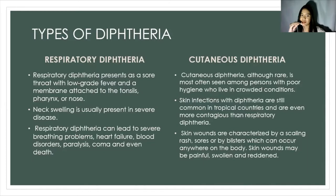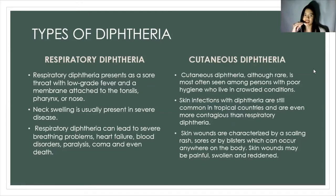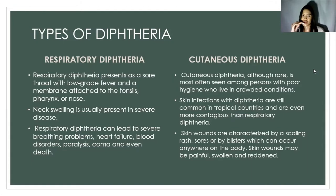In respiratory diphtheria, the bacteria most commonly infect the respiratory system, which includes body parts involved in breathing. When the bacteria gets into and attaches to the lining of the respiratory system, it can cause weakness, sore throat, mild fever, and swollen glands in the neck. The bacteria makes a toxin that kills healthy tissues in the respiratory system. Within two to three days, the dead tissue forms a thick gray coating called the pseudomembrane, which can build up in the throat or nose, covering tissues in the nose, tonsils, voice box, and throat, making it very hard to breathe and swallow.